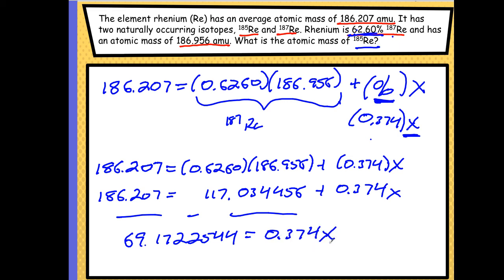Now I've got to divide both sides by 0.374. That cancels out, and my x is going to be, so 69, that long number, divided by 0.374, and I got an answer to be...